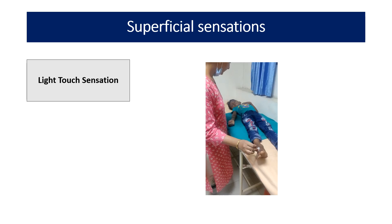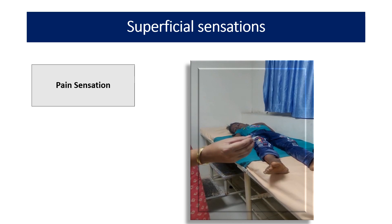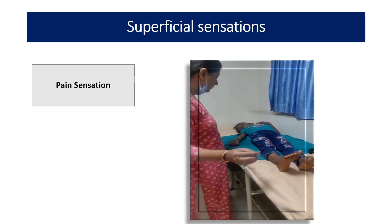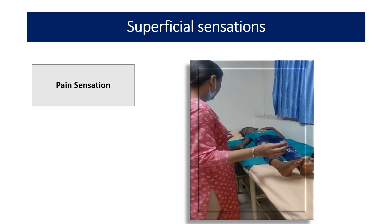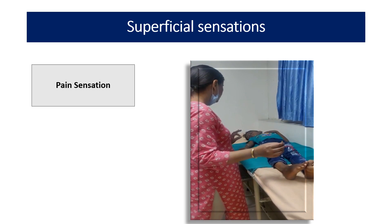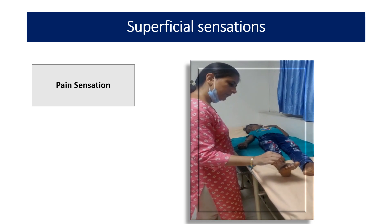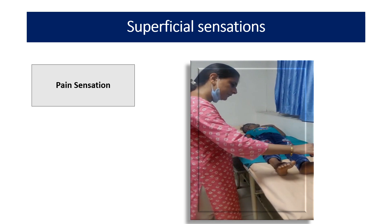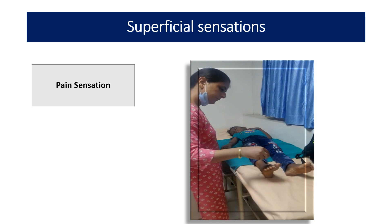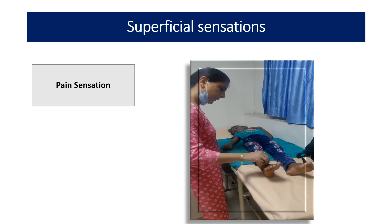Ideally we should expose all body parts except genitals so we can identify which dermatome is affected, as seen in peripheral neuropathy. For pain sensation, we use a safety pin. Show the child the safety pin and touch both the blunt and sharp end. The child should respond whether a sharp or dull stimulus is felt, and on which body part.